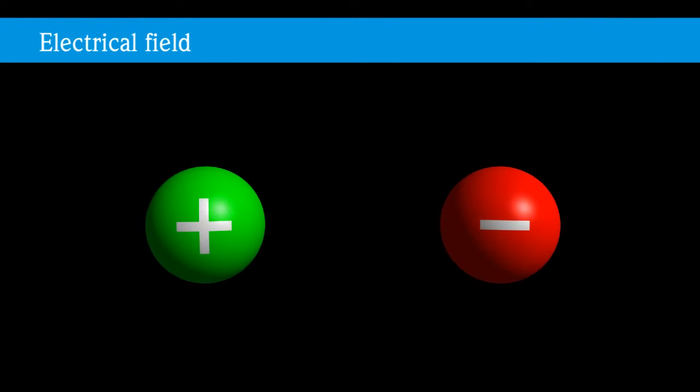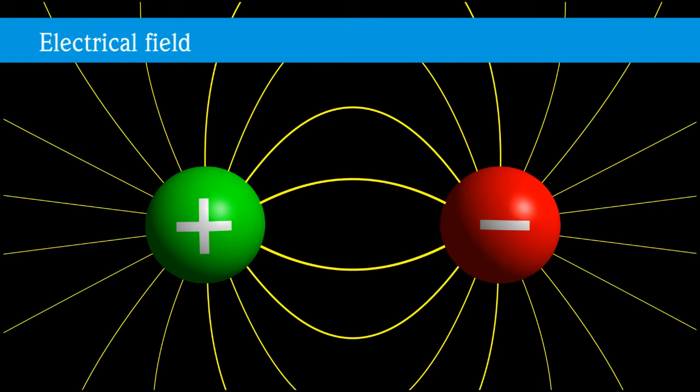The space between two unevenly charged objects is called an electric field. In this space, one electric charge exerts a force on another charge. The strength and direction of the electric field is shown by lines of flux.